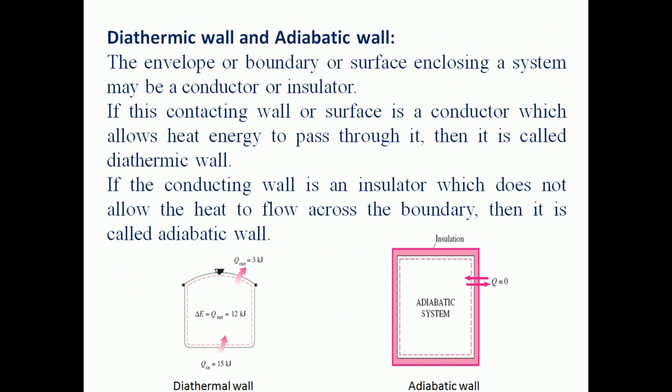Diathermic and adiabatic wall: the system we are going to consider is enclosed with an envelope, boundary, or surface. The enclosing surface may be a conductor or an insulator. If the wall or surface is a conductor which allows heat energy to pass through it, then it is called a diathermic wall. Across the system boundary, heat energy can transfer — that wall is called a diathermic wall.